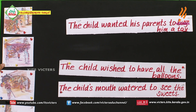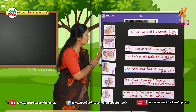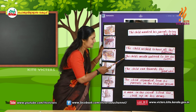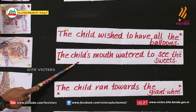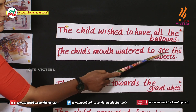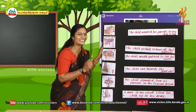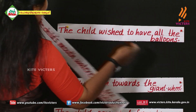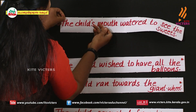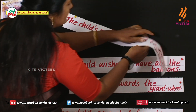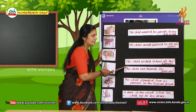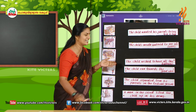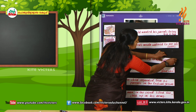See the second picture — sweet shop. The sweet shop is here in this picture, so search for the correct event. Read it: the child's mouth watered to see the sweets. Yes, that is the correct matching sentence. Take it and fix it in the second position. This is the second event in our story. Read the next one: the child wished to have all the balloons — it is the correct matching sentence.